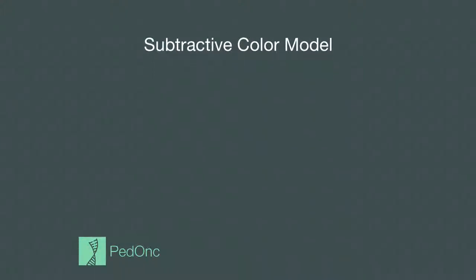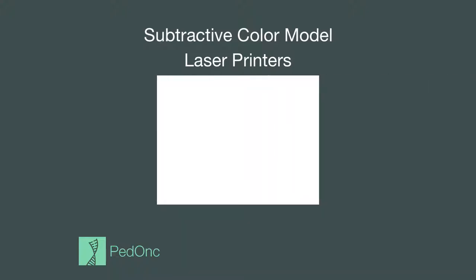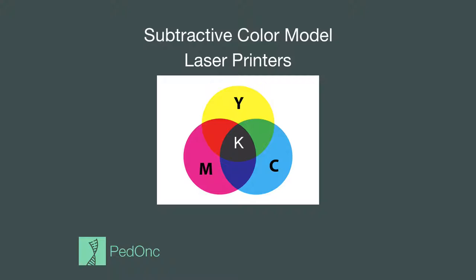This is called a subtractive color model. Laser printers use this type of color model to render colors on a printed page. A white page of paper is loaded into the printer, and the printer applies toner to create different colors using combinations of cyan, magenta, yellow, and black toner — represented by C, M, Y, and K respectively.